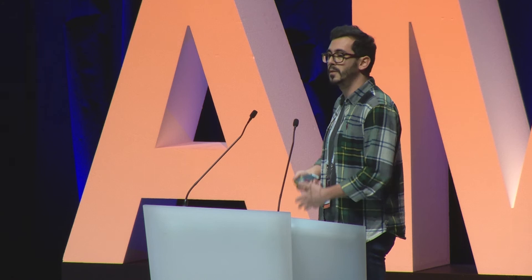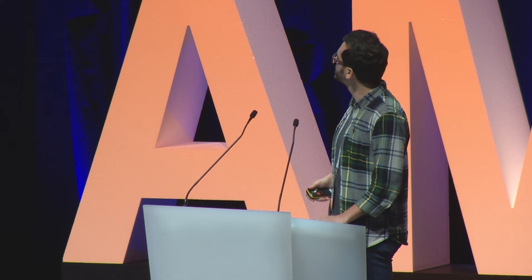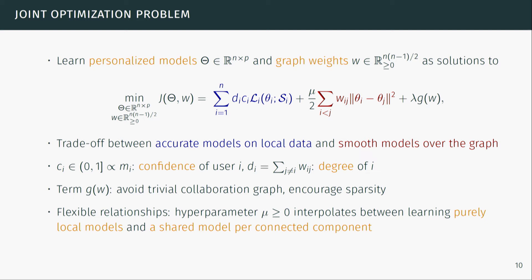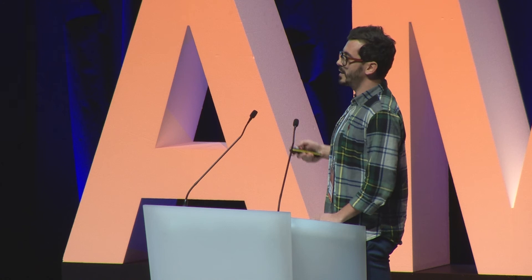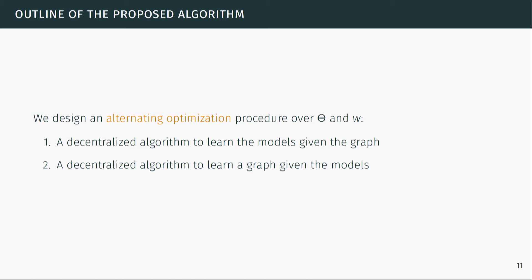This objective encodes quite flexible relationships. If you set the hyperparameter nu to zero, you get the simple baseline of purely local models. If nu goes to infinity, the red term becomes a hard equality constraint for models in the same connected component — essentially learning global models, one per connected component of the graph.